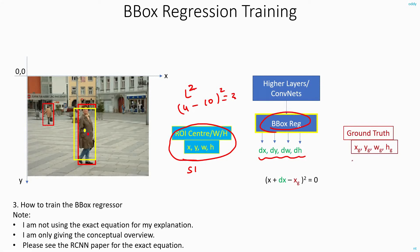And these are the values that you are expecting: xg, yg, wg, and hg, the ground truth boxes.